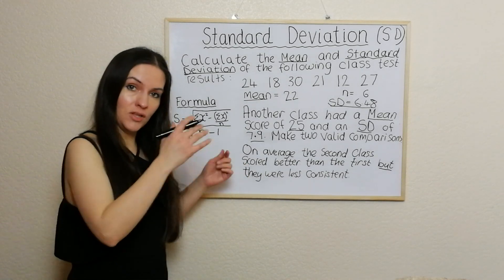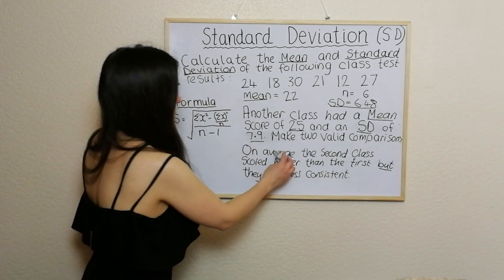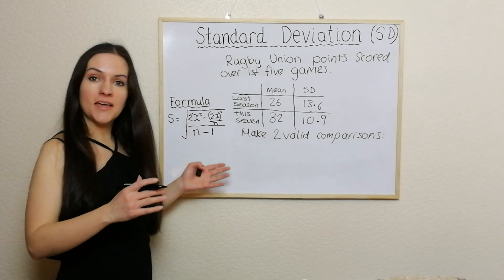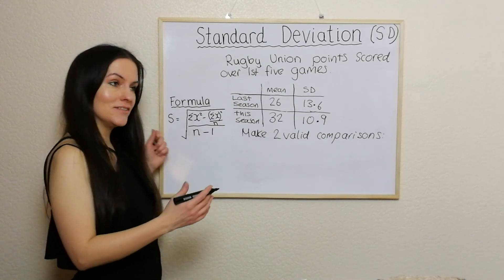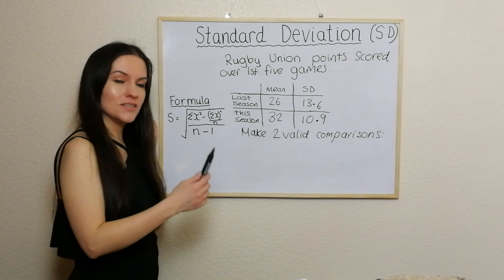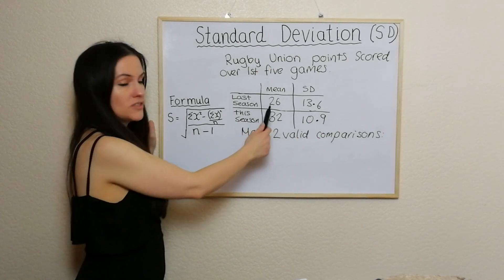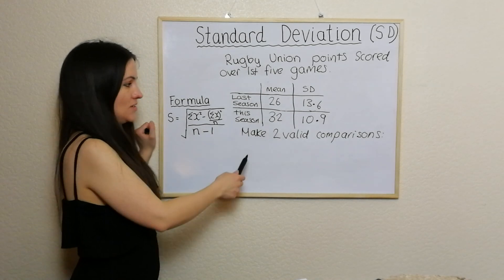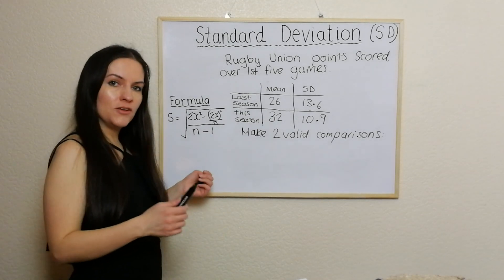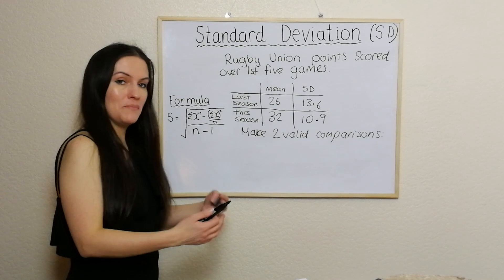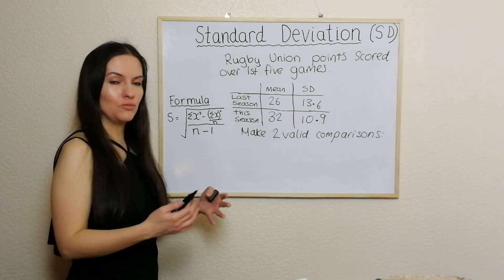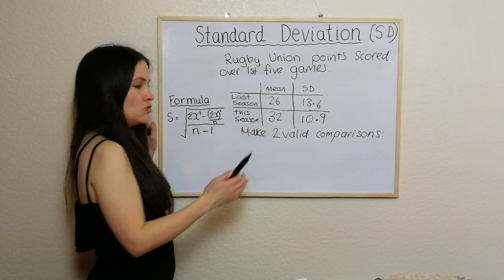Now I'm going to show you another example. This could be the same as the second part of a question, but you could also get it in isolation. We're told rugby union points scored over the first five games in each season. We've got last season's mean and standard deviation, and this season's mean and standard deviation. We need to think: if the mean is higher, one team is doing better; if the standard deviation is lower, there's more consistency. We're asked to make two valid comparisons.